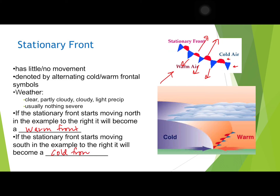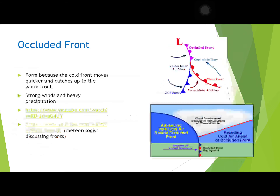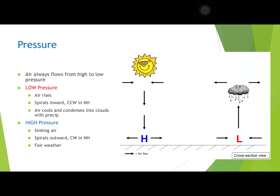An occluded front forms because a cold front moves quicker and catches up to a warm front, compounding each other and getting stronger. When you have an occluded front you could have very strong thunderstorms. You can see where the cold front runs into the warm front, strong storms can form.